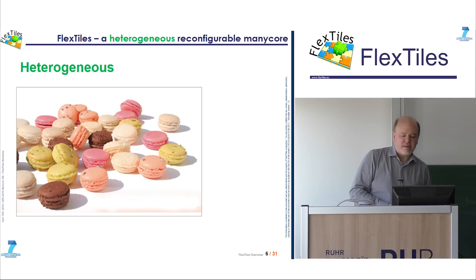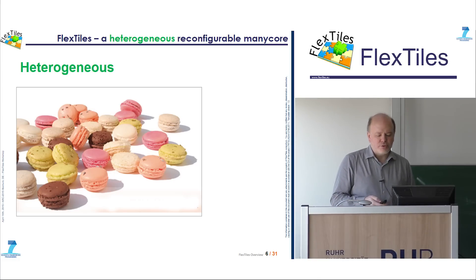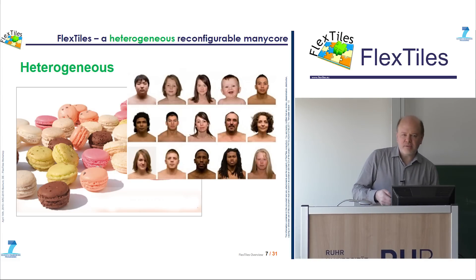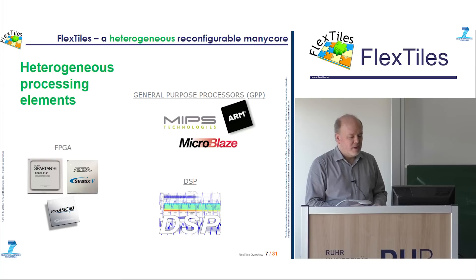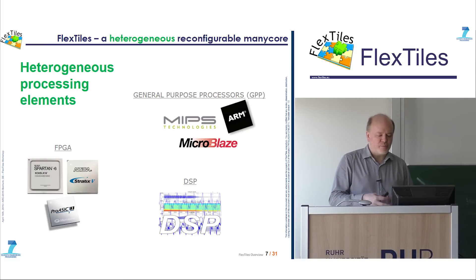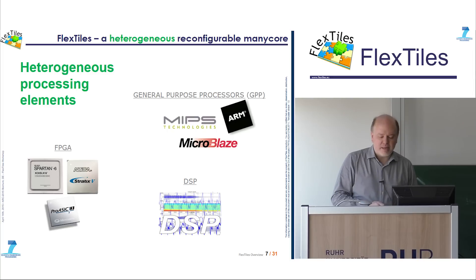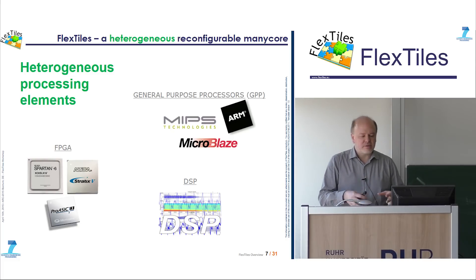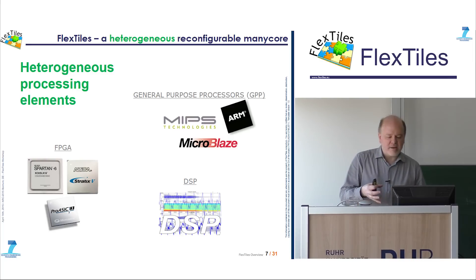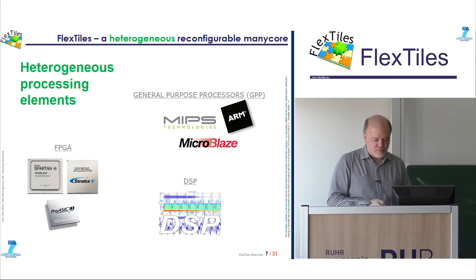Regarding heterogeneity: there's no one solution, one type, or one building that is ideally suited for all situations. In our case, we're talking about processors, so we want a heterogeneous group of processing elements. We have three groups: general purpose processors (GPPs), digital signal processors (DSPs), and FPGAs. They each have their advantages and inconveniences, and by having some of each type of processing element in FlexTiles, we provide a better overall solution.